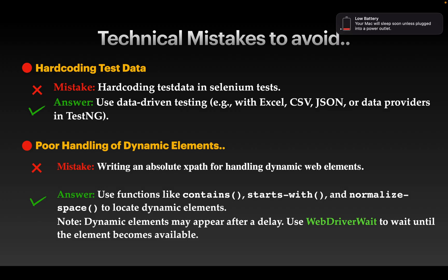Another common mistake is poor handling of dynamic web elements. Many candidates talk about writing absolute XPath for dynamic elements, but we cannot completely depend on absolute XPath — if there's any change in the HTML tree, it won't work. It's better to use XPath functions like contains, starts-with, or normalize-space, and also use explicit waits since dynamic elements may appear after a delay.